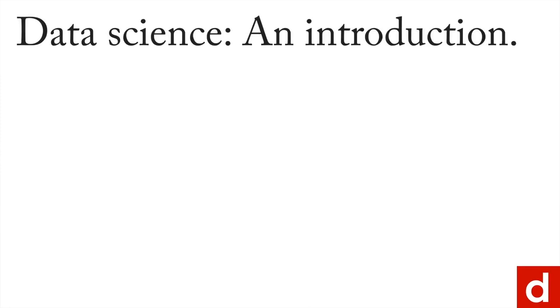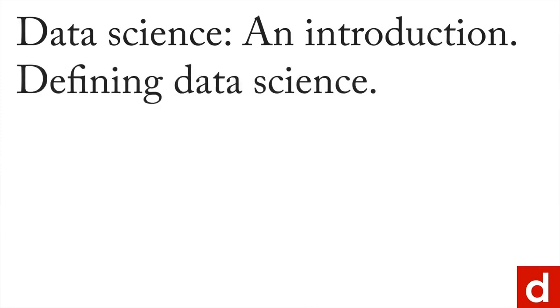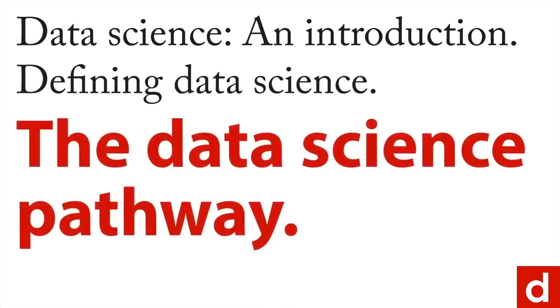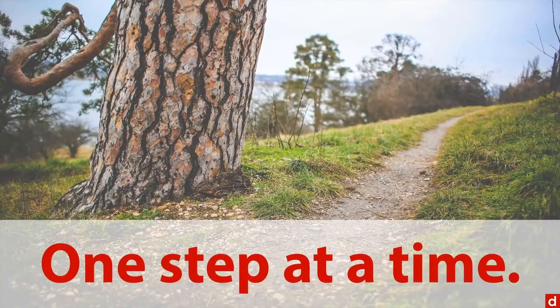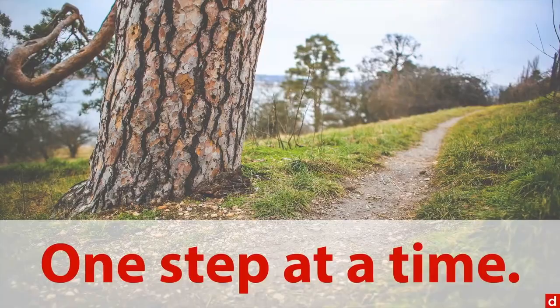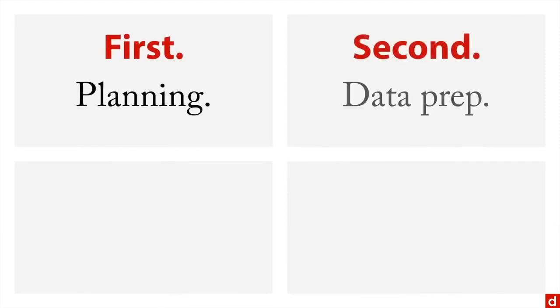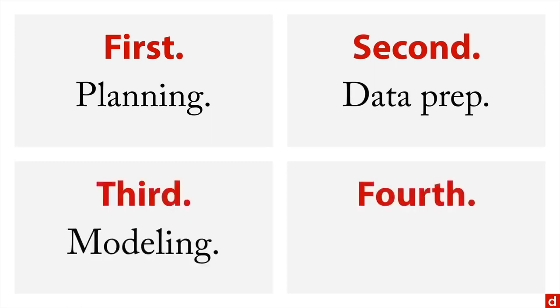The next step in our data science introduction and our definition of data science is to talk about the data science pathway. I like to think of this as when you're working on a major project, you've got to do one step at a time. In data science, you can take the various steps and put them into a couple of general categories. First, there are the steps that involve planning. Second, there's the data prep. Third, there's the actual modeling of the data. And fourth, there's the follow-up. And there are several steps within each of these.